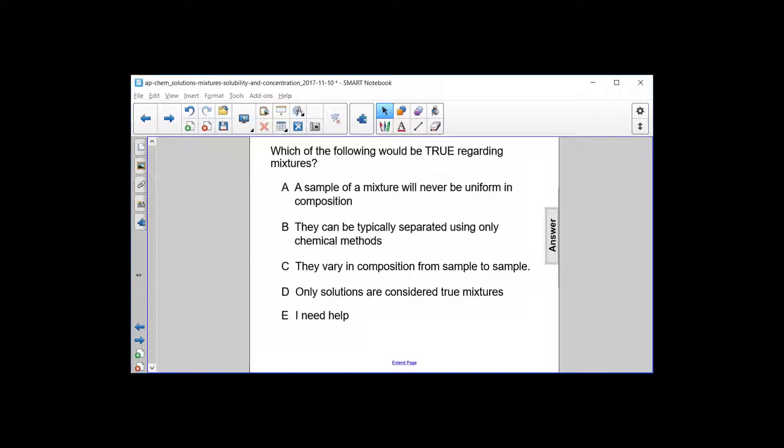Choice A: A sample of a mixture will never be uniform in composition. The key here is never. Remember that we do have some mixtures that can be uniform in composition - we call those solutions. So A cannot be the answer.